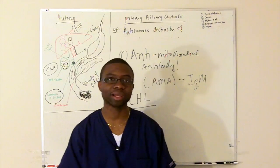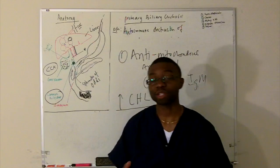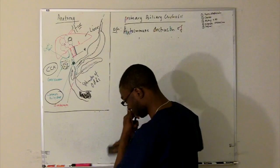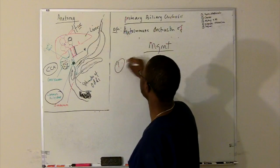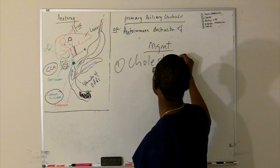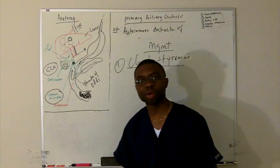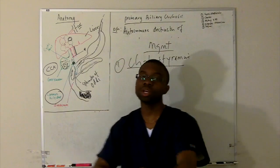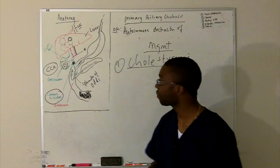How do we treat it? It's largely symptomatic. They're itching a lot, so we have a drug for that: cholestyramine. Cholestyramine is a bile acid sequestrant — it's the bile acids on the skin that are causing the itching and irritation. When you take cholestyramine it binds to those bile acids and you excrete them.